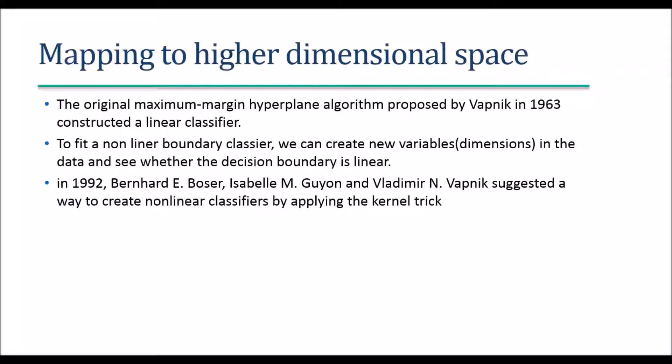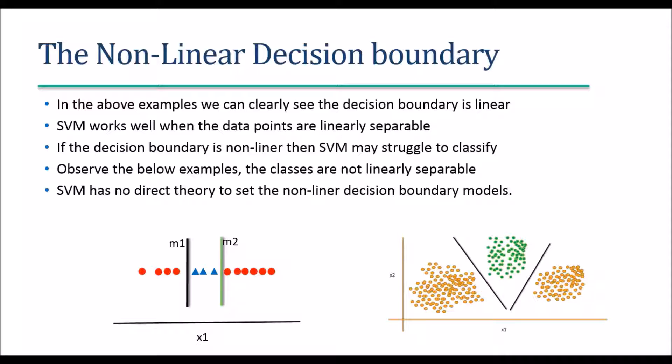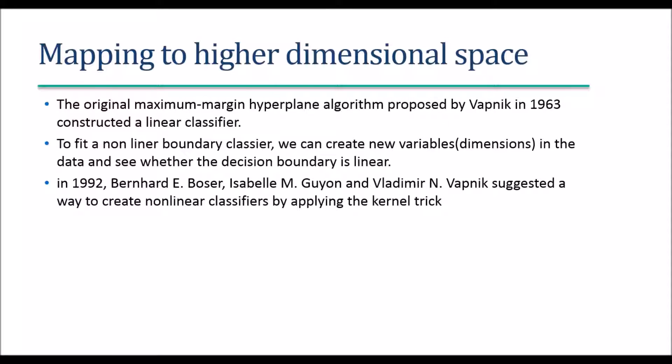The original model was proposed by Vapnik in 1963, majorly focusing on constructing a linear classifier. To fit a nonlinear boundary, what we need to do is create new variables or new dimensions in the data, and then see whether in that new, higher-dimensional space the classes are linearly separable. This is called the kernel trick. In the kernel trick, we try to increase the number of dimensions to make nonlinear data linear in a higher-dimensional space.